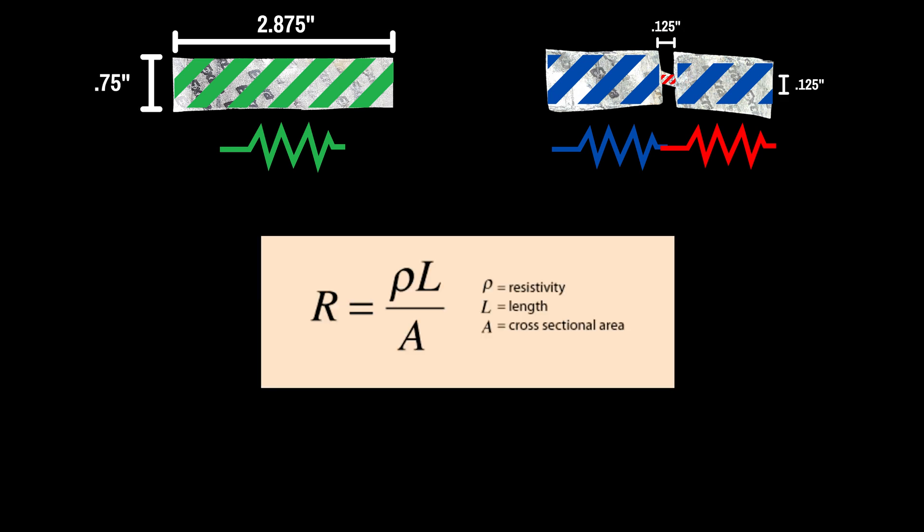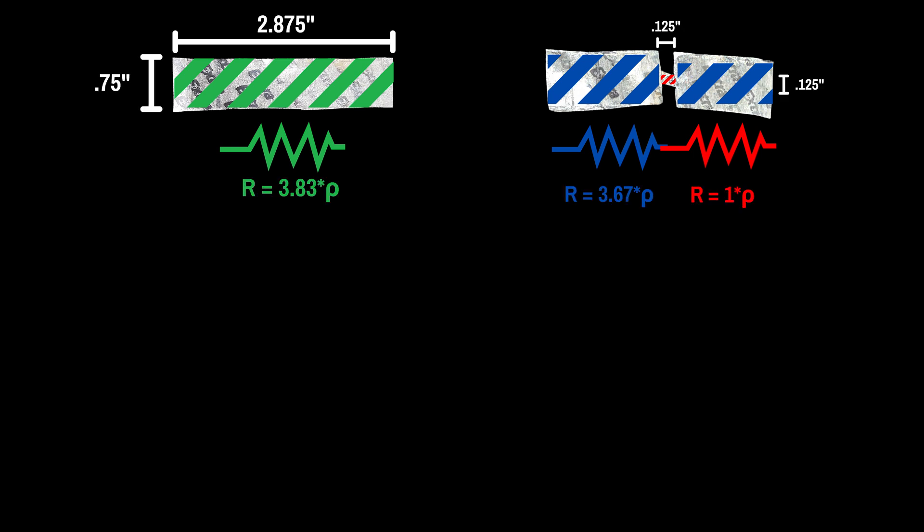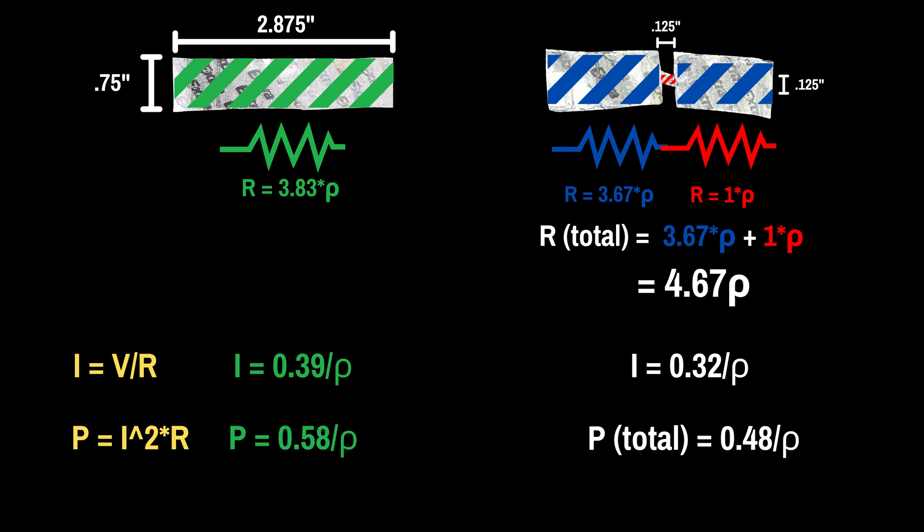After taking measurements and using the formula to calculate resistance, you unsurprisingly see that the total resistance does increase in the second case. Yes, that means there's less current drawn from the battery and less total power is consumed. Nothing new there.